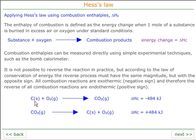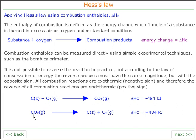The enthalpy of combustion of carbon is: carbon plus oxygen gives carbon dioxide. The enthalpy reverse of this reaction, according to the law of conservation of energy, must be the reverse of the energy change as well. So if the enthalpy of combustion of carbon plus oxygen to carbon dioxide is minus 484 kJ, then doing it the other way around — you can't actually do it, but if you imagine it — it would be exactly the same magnitude but opposite in sign.